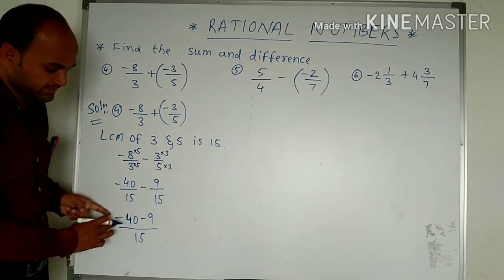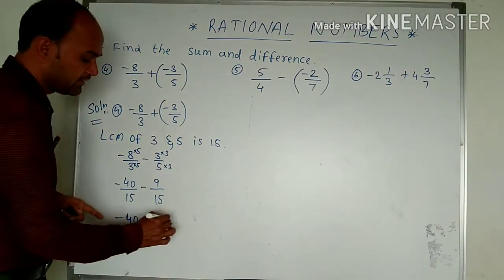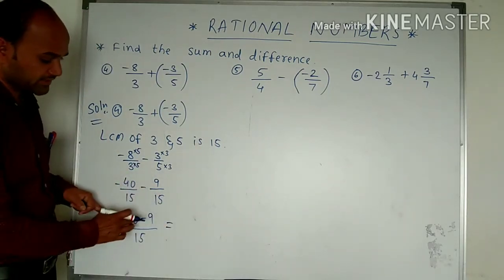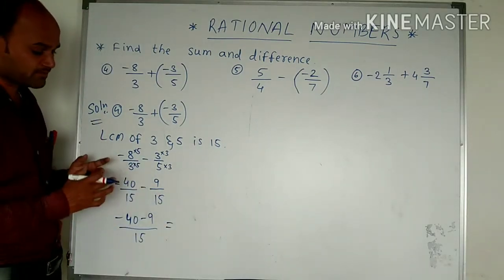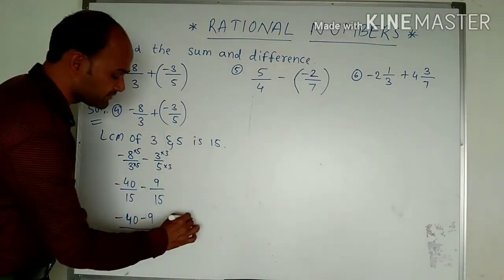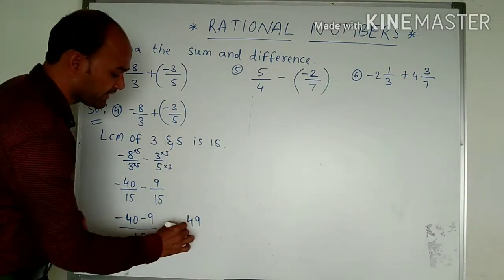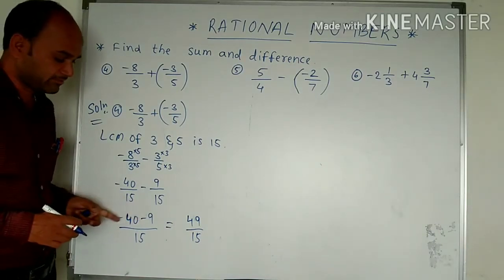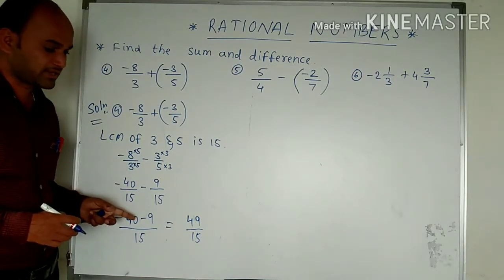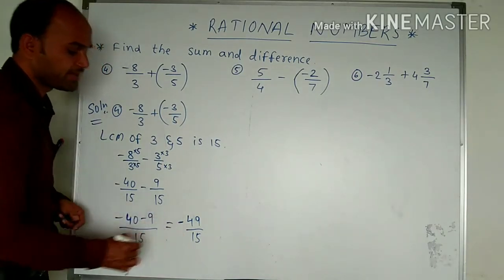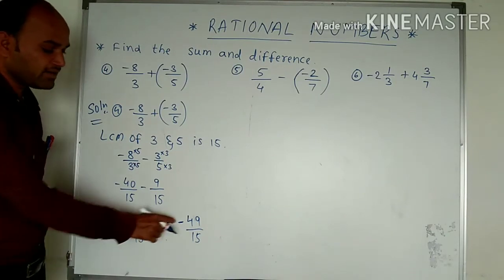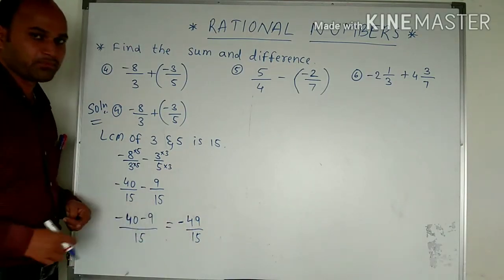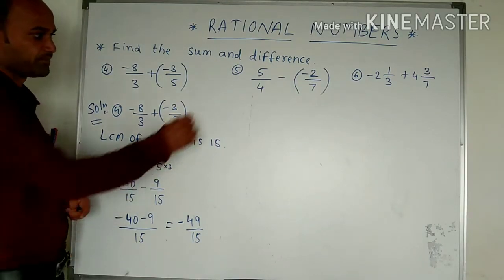Minus into minus becomes plus, so we have to add together — because there are two minuses, they become plus. We add 40 and 9 to get 49, but since both symbols are minus, the result remains negative. So the answer is minus 49 upon 15.